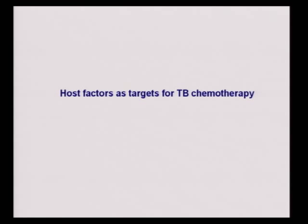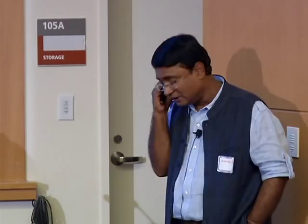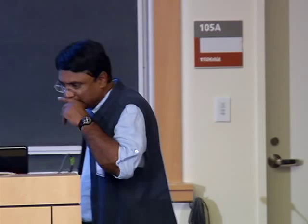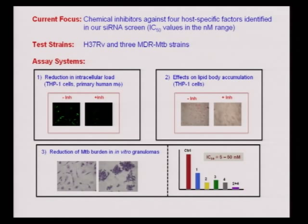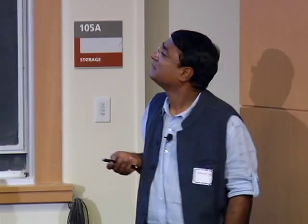Another starting point of this investigation was: if we identified key host factors required for mycobacterial intracellular survival, can such factors become drug targets? This is work in progress. From those targets identified, we are now focusing on chemical inhibitors against four of them. These four inhibitors are already on the market and have cleared clinical trials, so it's really a repurposing strategy that allows us to quickly move to subsequent stages of evaluation.